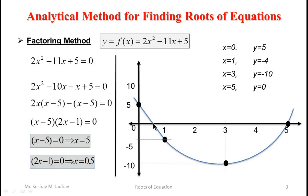This curve intersects the x-axis at two points. The points at which the curve intersects the x-axis are called the roots of that equation. So these two are the roots of the equation, and here we can see these values are 0.5 and 5 — so these are the roots of the given equation.